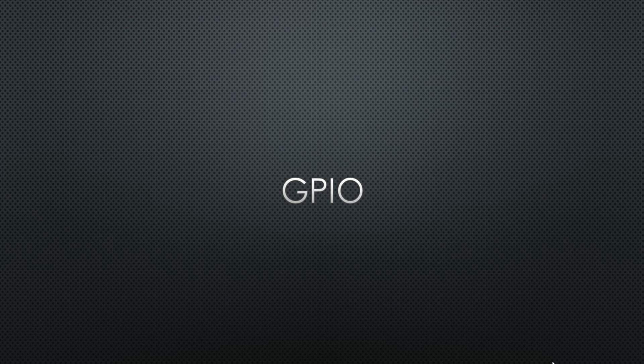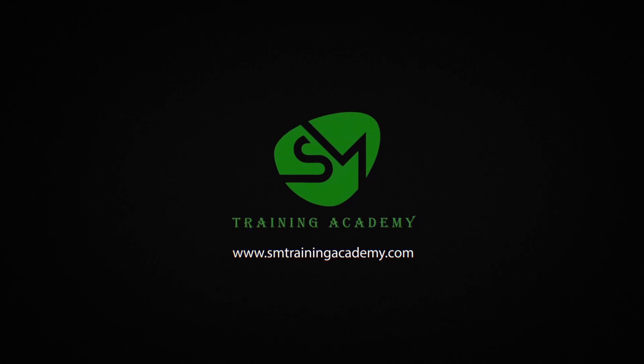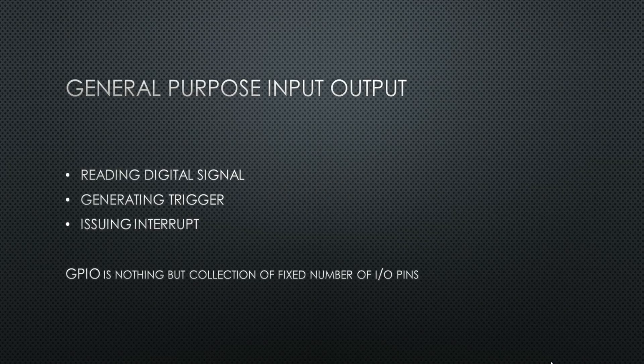Hello everyone. In this lecture I am going to elaborate what is a GPIO pin of a microcontroller and how it is functioning inside the microcontroller. GPIO is nothing but general purpose input output pins of a microcontroller. These GPIO pins are specially meant for reading digital signals when configured as input, generating triggers when configured as output, and receiving interrupt signals when configured as external interrupt pins. These are the main functionalities of GPIO pins in a microcontroller.